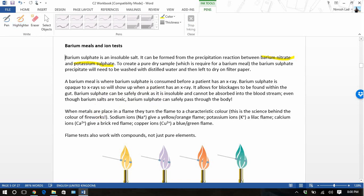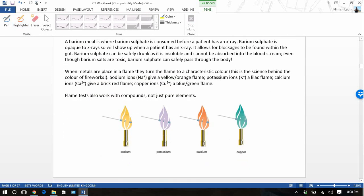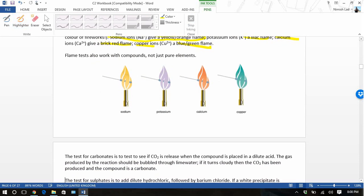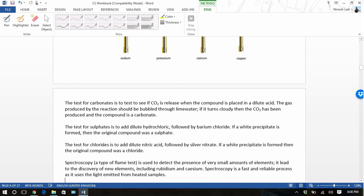We can test for certain ions as well. Metals are placed in the flame and they turn the flame in characteristic colours. This is the science behind fireworks. Sodium ions are yellowy-orange. Potassium ions are a lilac flame. Calcium ions are a brick red. Copper ions are a blue-green flame. Flame tests also work with compounds, not just the pure elements. You can have a salt of sodium and that will allow it to go yellowy-orange.